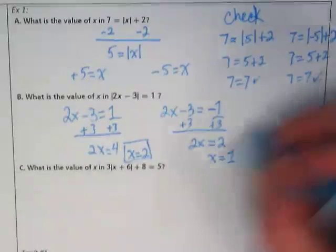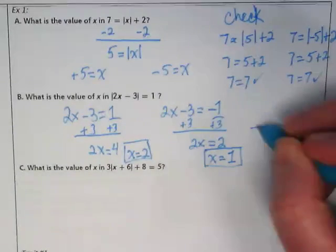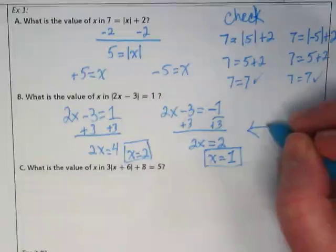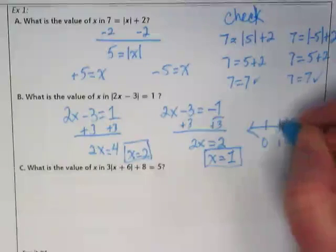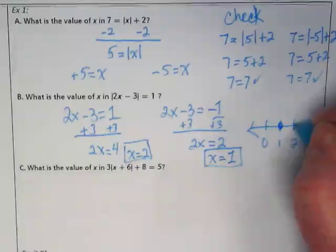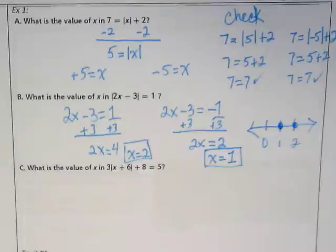So the solutions are x is equal to 2 and x is equal to 1. So again, quick number line, 0, 1, 2. We're not drawing arrows. We're just saying those 2 numbers would make this inequality true.